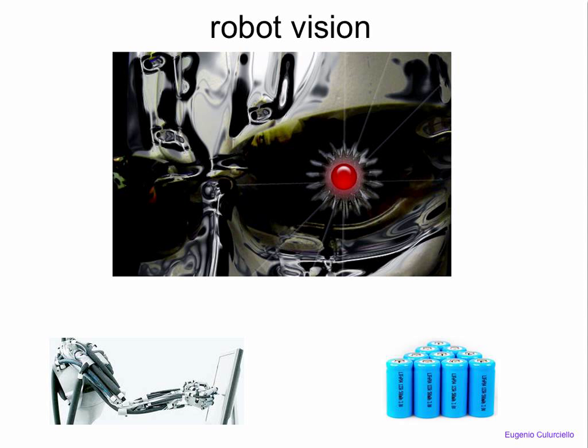Sometimes I call this project — which is really a research project, and none of the things we're going to talk about in this class are commercial in any way yet — the eye of the Terminator. What we really want is a pocket-sized device, about the size of a cell phone, that probably has the same capability of vision that you have.